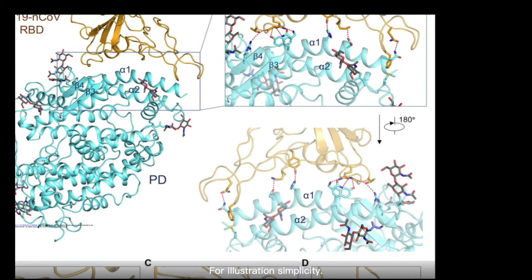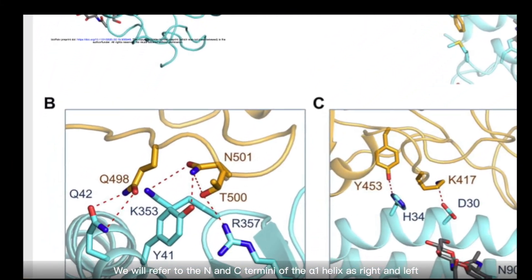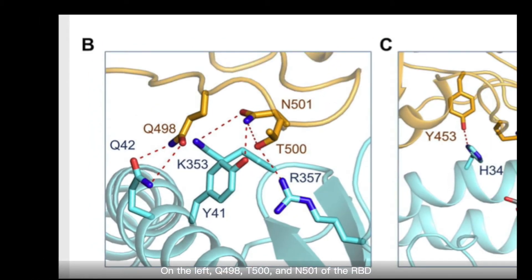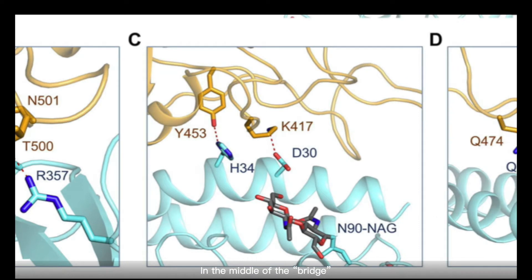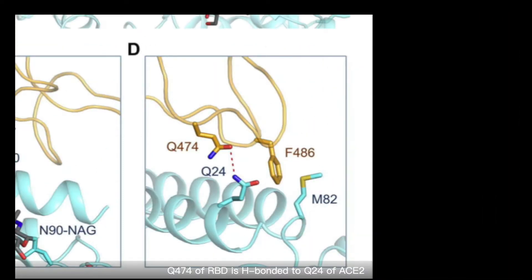For illustration simplicity, we will refer to the N and C termini of the alpha-1 helix as right and left. On the left, Q498, T500, and N501 of RBD form a network of hydrogen bonds with Y41, Q42, K353, and R357 from ACE2. In the middle of the bridge, K470 and Y453 of RBD interact with D30 and H34 of ACE2, respectively. On the right, Q474 of RBD is hydrogen bonded to Q24 of ACE2, while F486 of RBD interacts with M82 of ACE2.